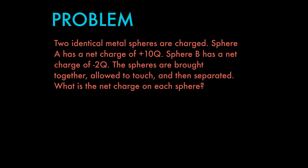There should be a positive 4 charge on each sphere. Through the conservation of charge, we know that the sum of the charges on spheres A and B must be constant throughout the whole process. After the spheres are separated, the sum of the charges has to remain positive 8 — that is, 10 plus negative 2. Since the spheres are identical, the total charge is evenly divided between the two spheres, and 8 divided by 2 is 4.